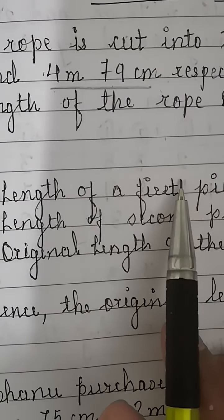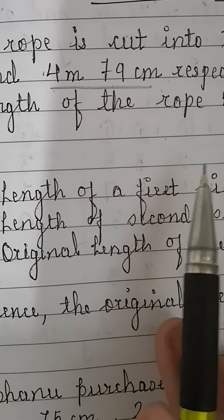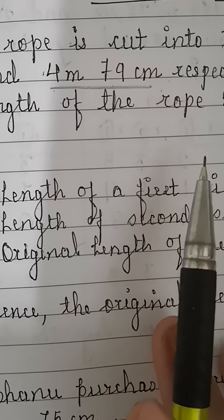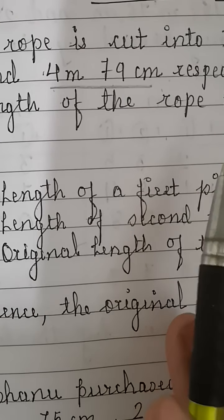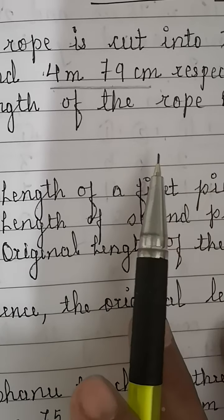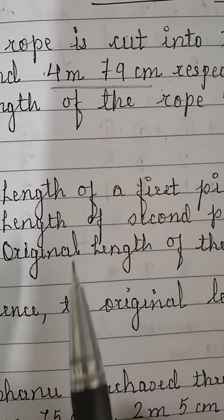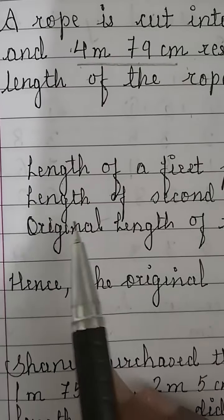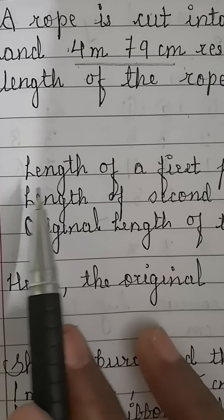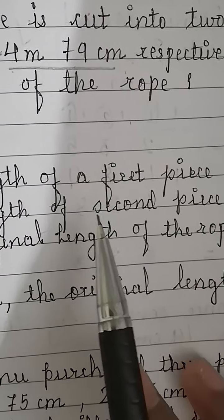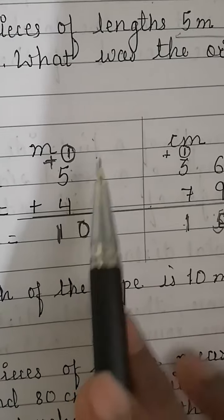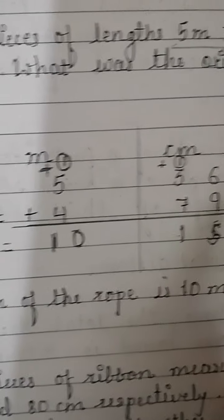Children, here we have given one rope and it is cut into two pieces, and the length of each piece is given to us. By using these lengths we have to find out what was the original length of the rope. Let's write the solution: length of first piece is 5 meter 36 centimeter, and length of second piece is 4 meter 79 centimeter.